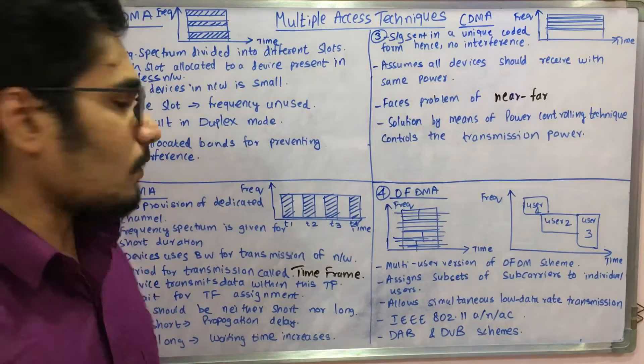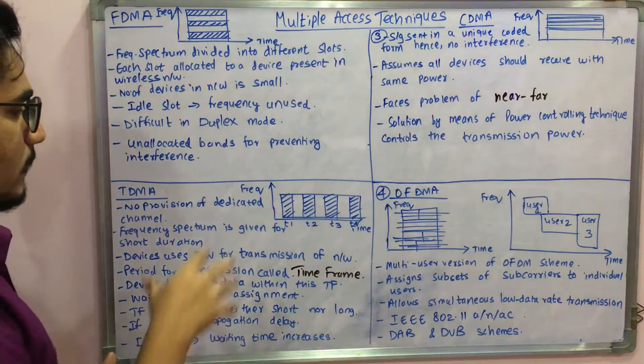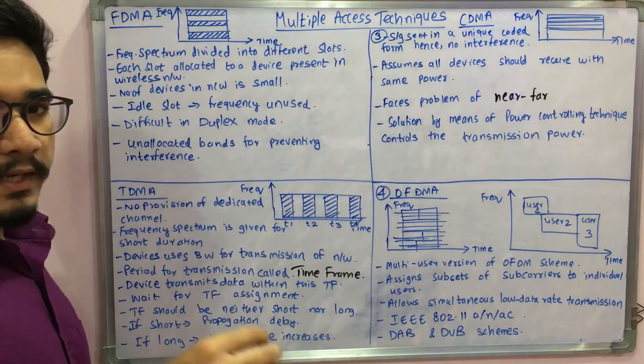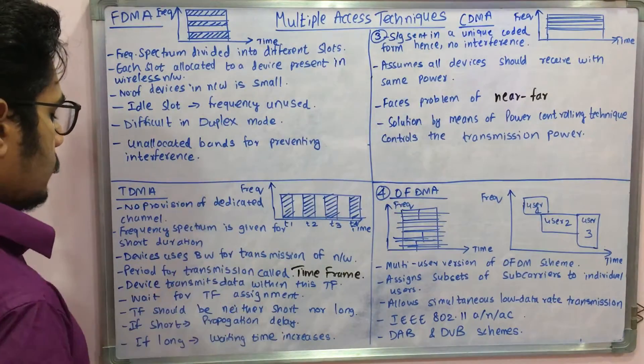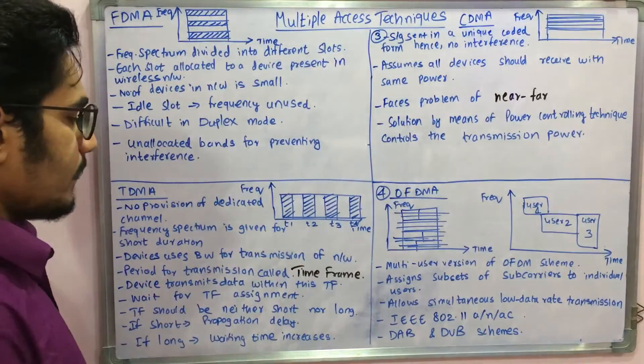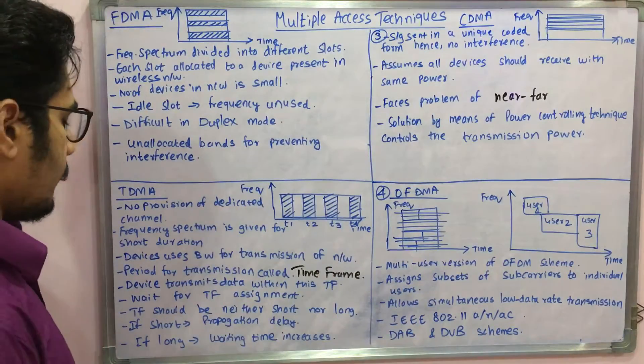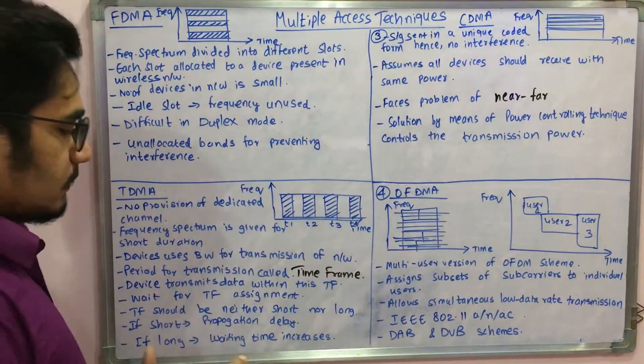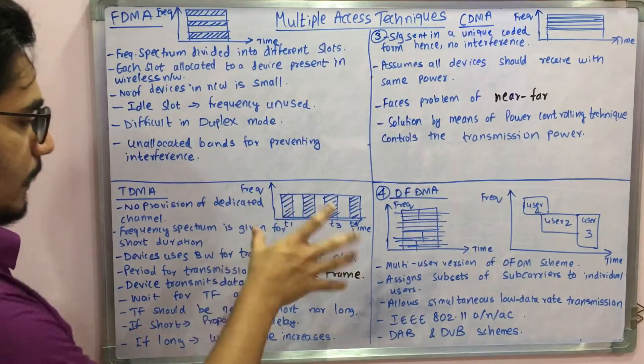Frequency spectrum is given for a short duration. Every device is assigned a time frame which we call in this. Devices use the available bandwidth for transmission on the given network, and the period for transmission of this data is called the time frame, shortened as TF.